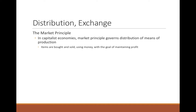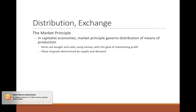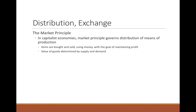In capitalist economies, the market principle governs distribution. Items are bought and sold using money with the goal of maintaining profit. The value of goods is determined by supply and demand. The cost to manufacture something doesn't set the price — Apple doesn't spend anywhere near a thousand dollars to make an iPhone X. By limiting supply and saturating the market with desire before release, price is artificially driven up. The key to maximizing profit is keeping supply low and making demand high.